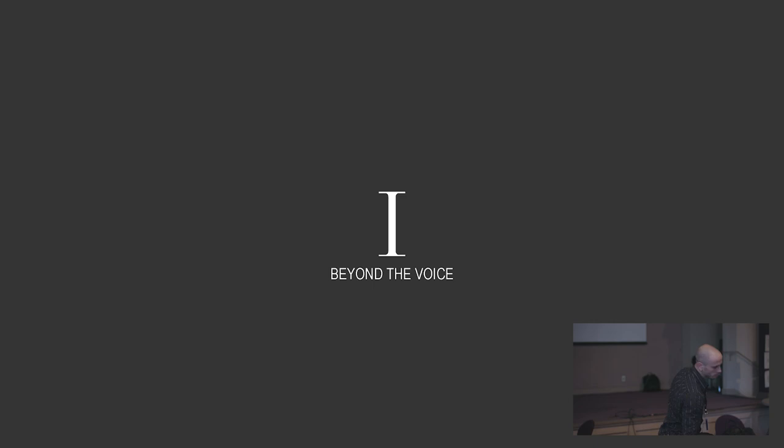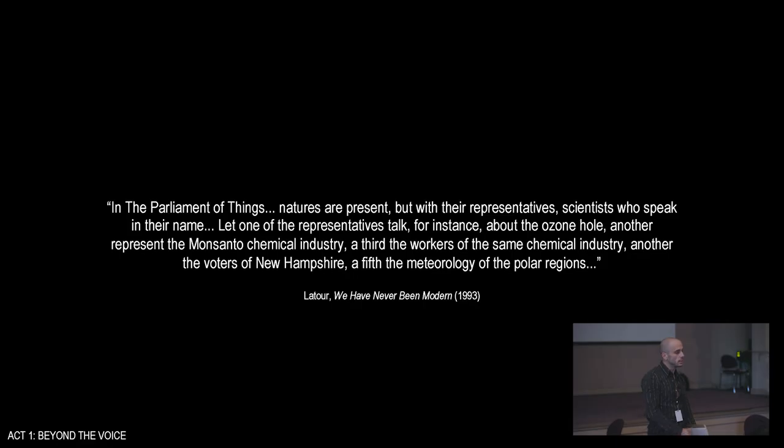So just to give some context, what we're talking about here today is trying to move beyond the voice as a mode of representation. So in 1993, Bruno Latour introduced the idea of the Parliament of Things, which was a hypothetical way of representing the interests of non-human entities in human decision-making systems. So he writes, in the Parliament of Things, natures are present, but with their representatives, scientists who speak in their names. Let one of the representatives talk, for instance, about the ozone hole, another represent Monsanto, a third the workers of the same chemical industry, and so on.